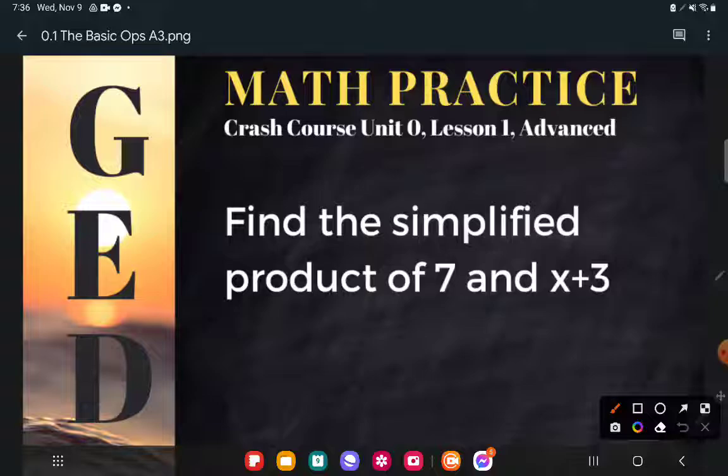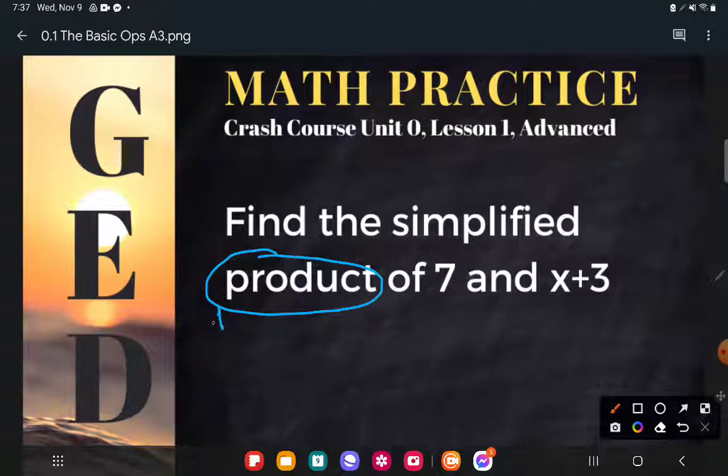So it says, find the simplified product of 7 and x plus 3. Now, a couple of things going on here. First of all, we have the word product going on. So we are going to write some kind of expression. Right now, I don't like this thing, find the simplified product of 7 and x plus 3, because this is in words. And a lot of times you guys will miss what to do when it's written in words.